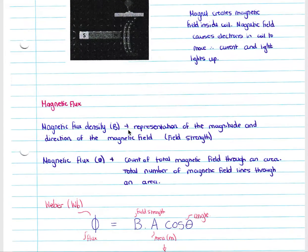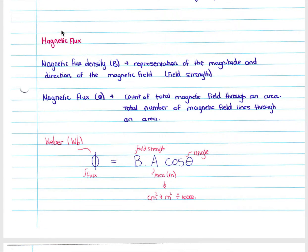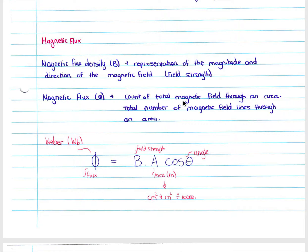The first important concept for this section is magnetic flux. Our magnetic flux density, shown by the B symbol, is a representation of the magnitude and direction of the magnetic field, or the field strength — specifically the field strength of the magnetic field in which our conductor is placed. Magnetic flux is the count of the total magnetic field through an area. You can think of it as the count of the magnetic field lines through an area — the amount or scale of magnetic field moving through an area.